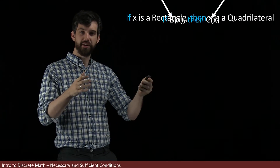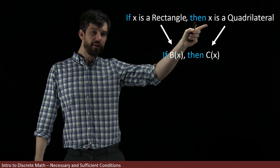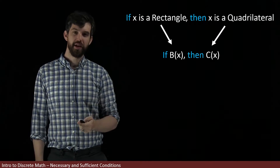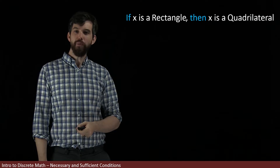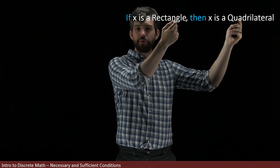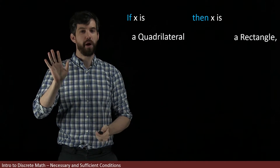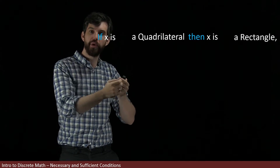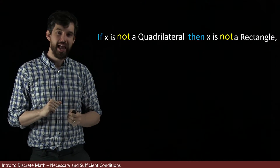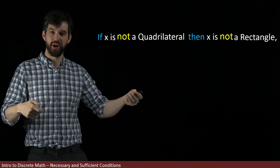The general form here is: if B(x) — where B(x) represents being a rectangle — then C(x), being a quadrilateral. This is another conditional statement, another implication. Now I want to write this in its contrapositive form. The contrapositive is formed by switching the order of the two properties and adding two negations, giving us: if not C(x), then not B(x). In other words, if it's not a quadrilateral, then it's not a rectangle — which is logically equivalent to saying if it is a rectangle, it must be a quadrilateral.